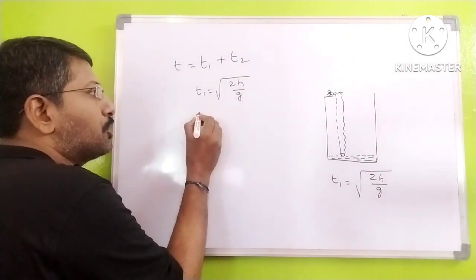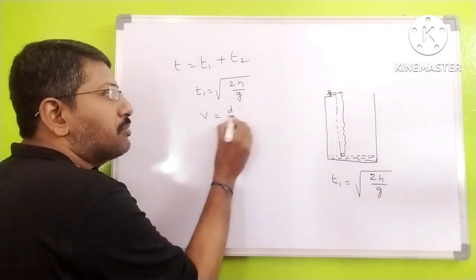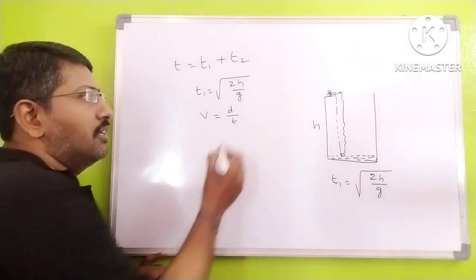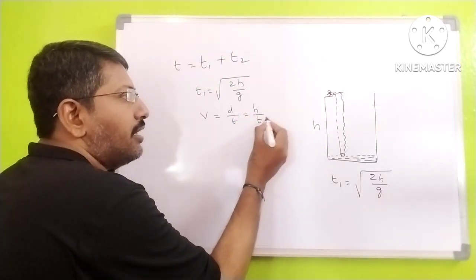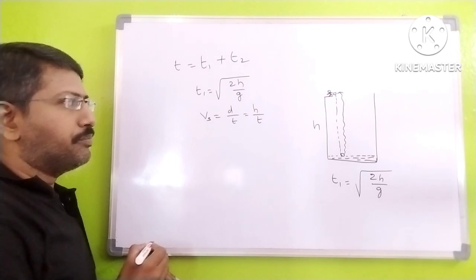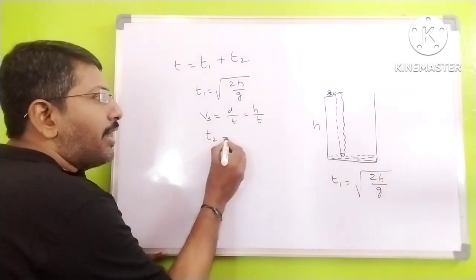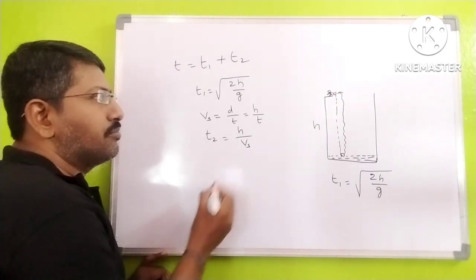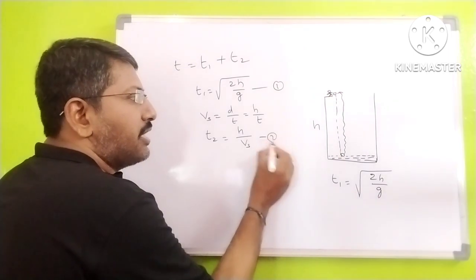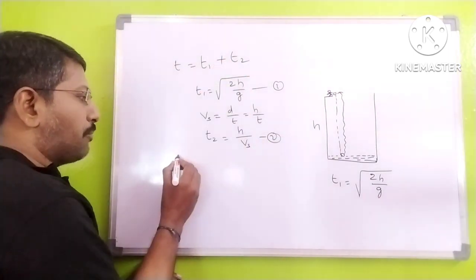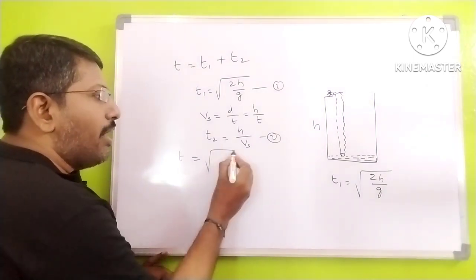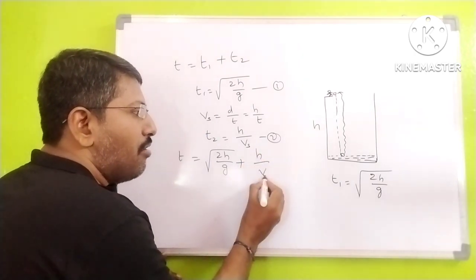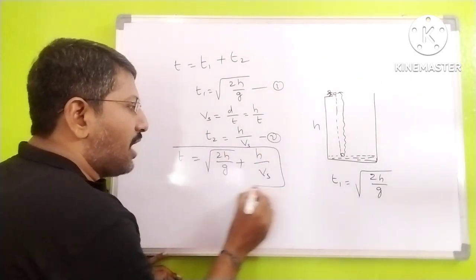Next, sound moves at constant speed. The speed formula is distance by time. The distance here is h, so h by t gives the speed of sound. That means t2 can be written as the depth of the well divided by the speed of sound, v_s. So the total time T equals the square root of 2h by g plus h by v_s. This is the basic concept.